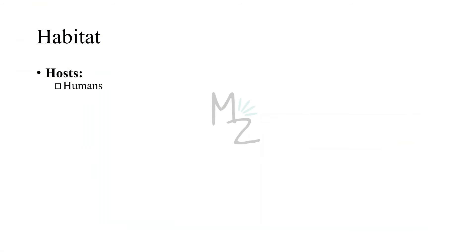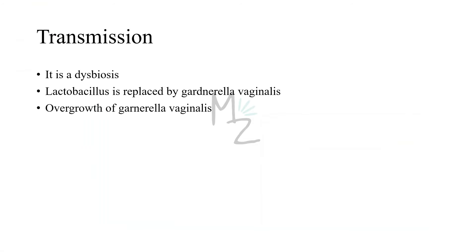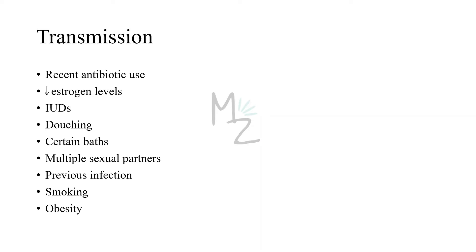Habitat: Human beings are its definitive hosts because it causes infection in humans. Transmission: Bacterial vaginosis is not transmitted by any sexual activity, but it's considered to be a dysbiosis in which the lactobacillus that normally lives in the vagina is replaced by Gardnerella vaginalis. Or in some people, Gardnerella is part of their normal vaginal flora and it simply grows in greater numbers — an overgrowth — which can cause bacterial vaginosis.